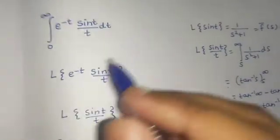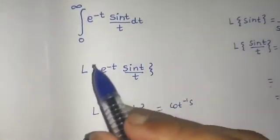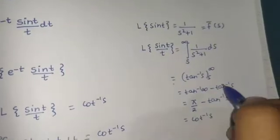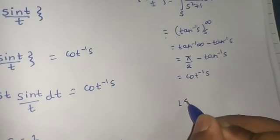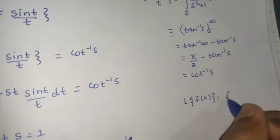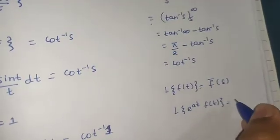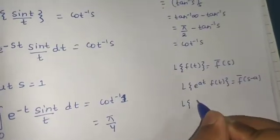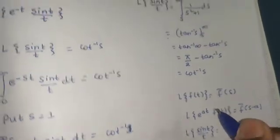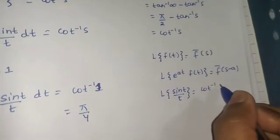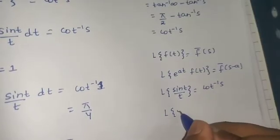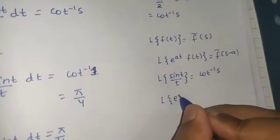Now there is an alternate method I mentioned earlier, where you solve for the complete expression. We have already found that Laplace of sin(t)/t equals cot⁻¹(s). We know the first shift theorem, which says that if Laplace of f(t) equals F(s), then Laplace of e^(at) f(t) equals F(s − a). So we have Laplace of sin(t)/t equal to cot⁻¹(s).